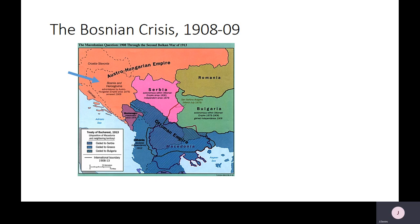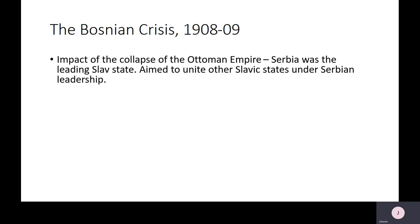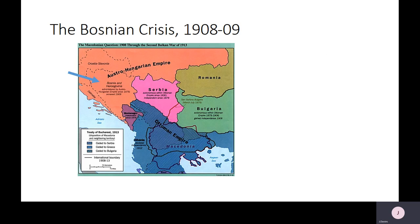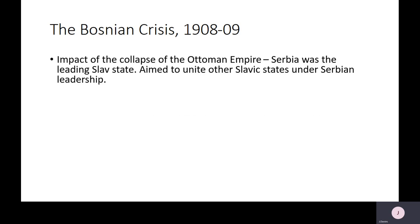The Bosnian crisis is our next important crisis, in 1909. You can see the arrow on screen pointing to Bosnia, which is shown in the same colour as the Austro-Hungarian Empire — because this is what happens: Bosnia is annexed by Austria-Hungary. This was all part of the continuing impact of the collapse of the Ottoman Empire, long known as the 'sick man of Europe'. In its wake, other countries were trying to gain independence and great powers were seizing former Ottoman territories. Serbia, visible in pink next to the Austro-Hungarian Empire on the map, was the leading Slav state and wanted to unite the other Slavic states under Serbian leadership.